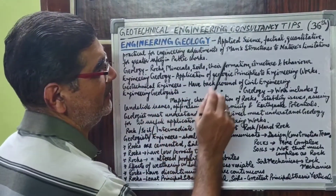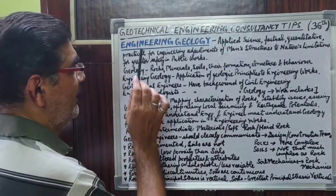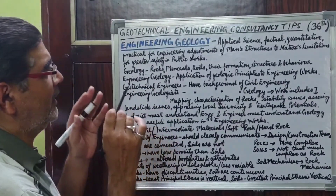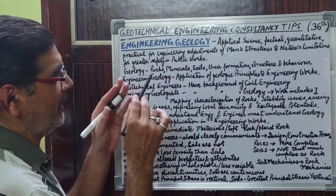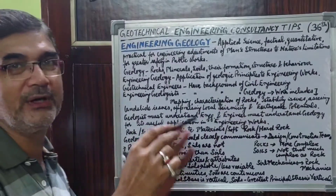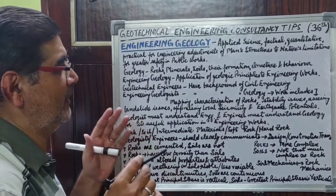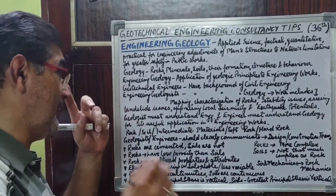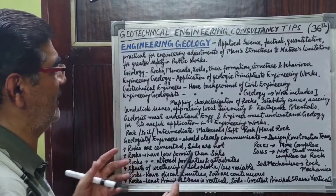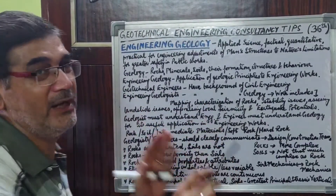Engineering geology is an applied science based on facts, quantitative analysis, and practical considerations. All these are mixed together for ensuring adjustments of man's structures to nature's limitations, in order to create a habitable habitat for man — any kind of habitation, may it be buildings, camps, tunnels, roads, or highways — for greater safety and public benefit. This is essentially engineering geology.